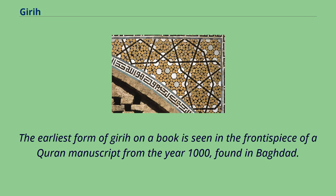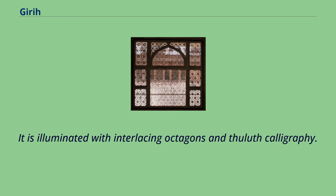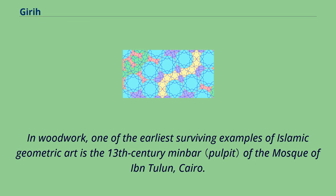The earliest form of girih on a book is seen in the frontispiece of a Quran manuscript from the year 1000, found in Baghdad, illuminated with interlacing octagons and thuluth calligraphy. In woodwork, one of the earliest surviving examples of Islamic geometric art is the 13th century Minbar of the Mosque of Ibn Tulun, Cairo.